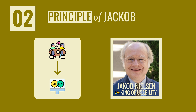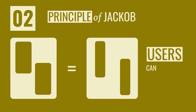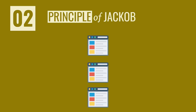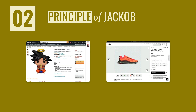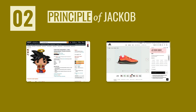Nielsen describes that users develop expectations of design based on their cumulative experience from other websites. He encourages designers to follow conventions so that users can focus on the message or product instead of figuring out how to navigate. For example, two e-commerce product pages follow the same conventions: product image on the left, a big title and description, specifications, and a prominent call-to-action button to add to cart — so users already know how to find information and complete purchases.